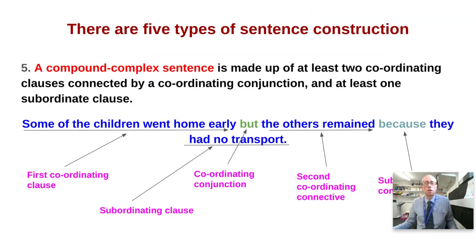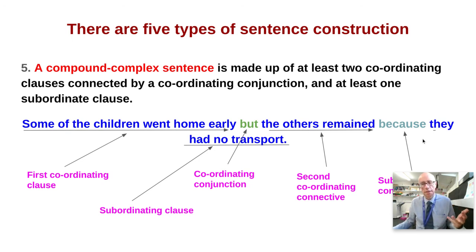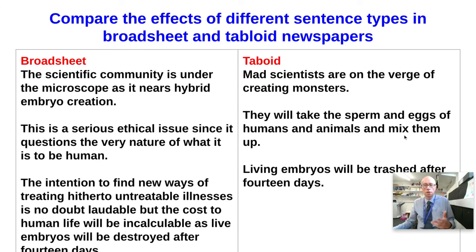And then of course you've got compound-complex sentences, which are made up of at least two independent clauses connected by a coordinating connective and at least one subordinate clause. From the example: 'Some of the children went home early' — one clause; 'the others remained' — another independent clause, glued by 'and'; 'because they had no transport' — that's the subordinate clause, introduced by the subordinating connective 'because'. If a text is full of compound-complex sentences, it places cognitively higher demands on the reader. Now it's interesting to look at journalism.